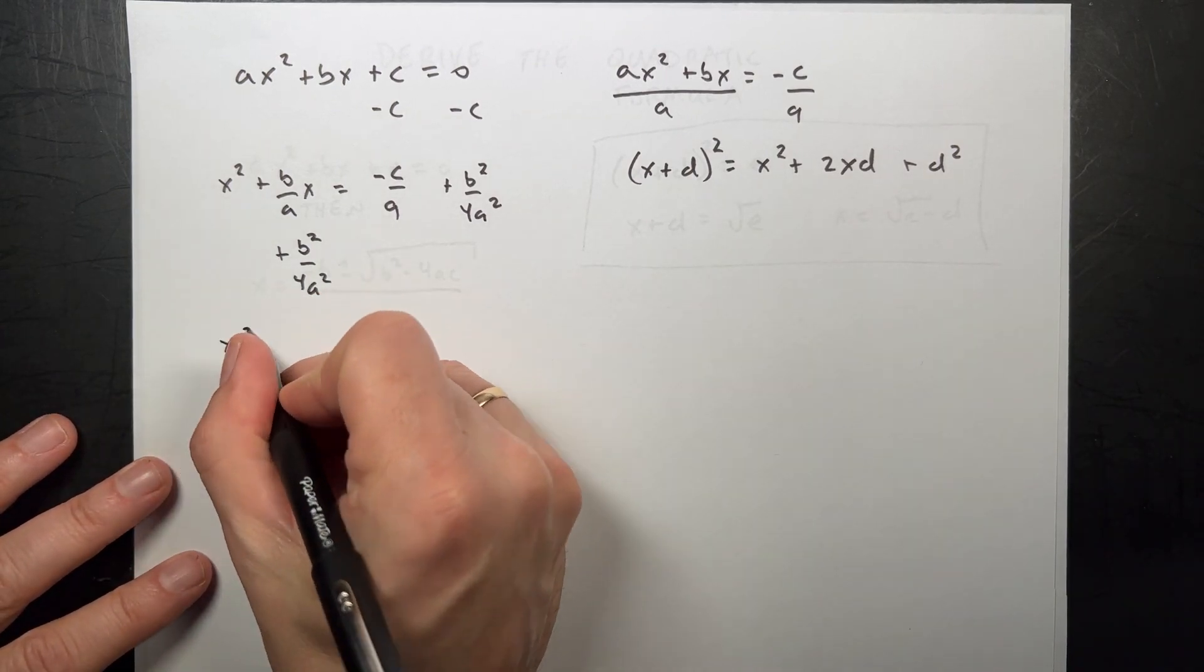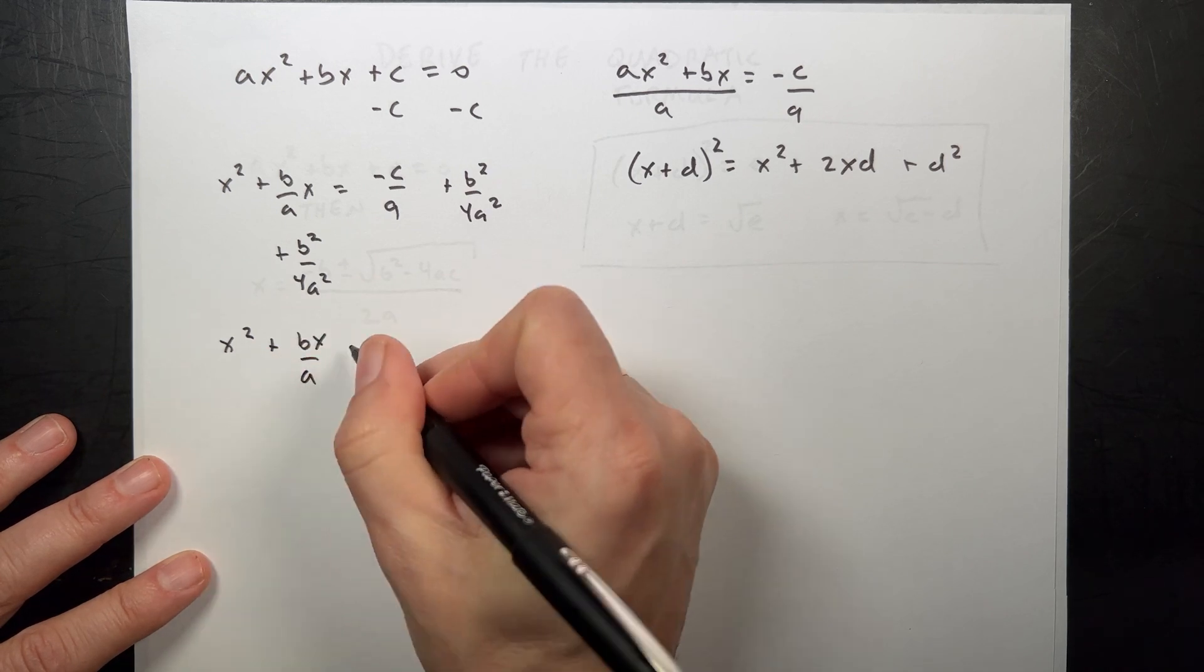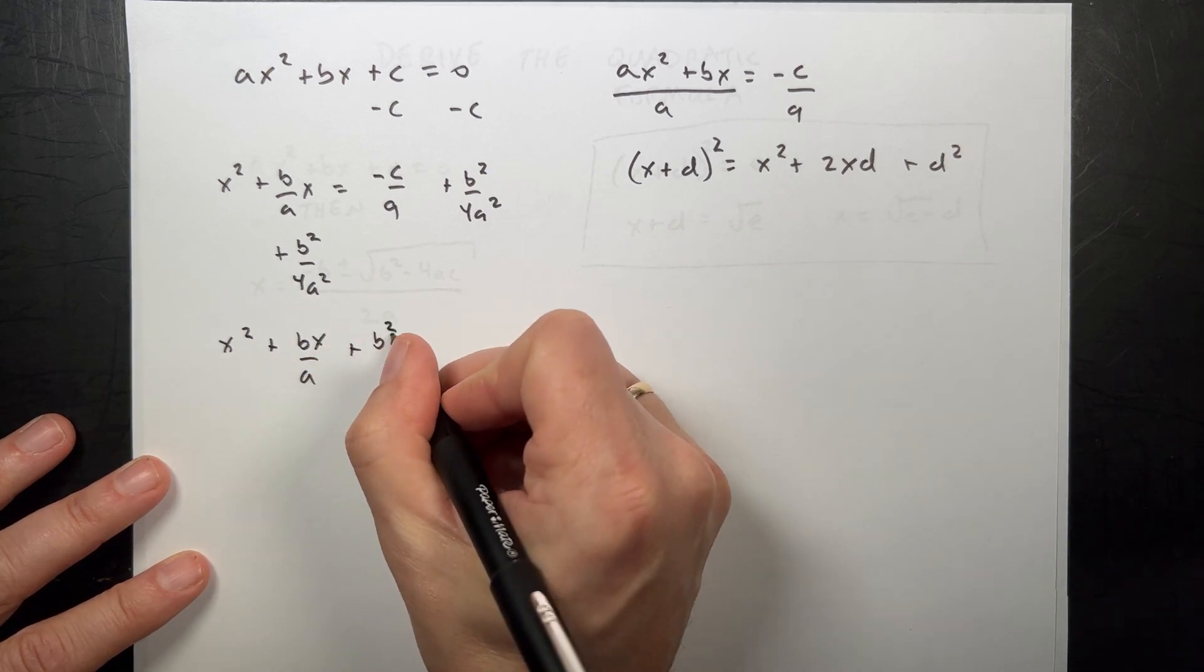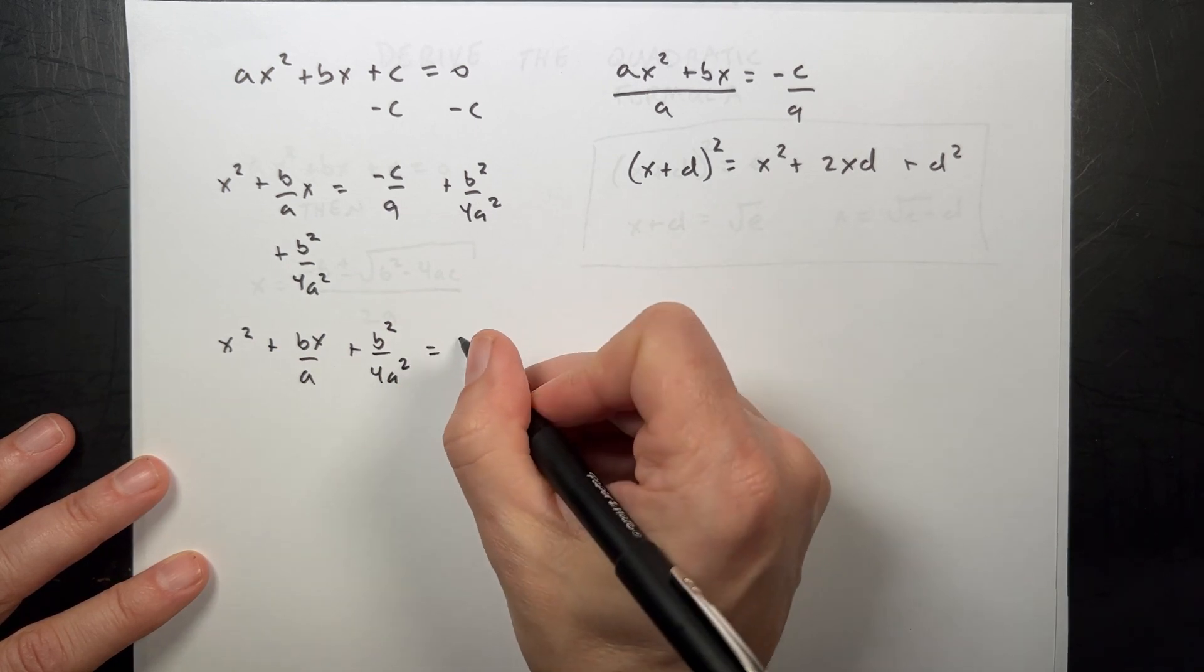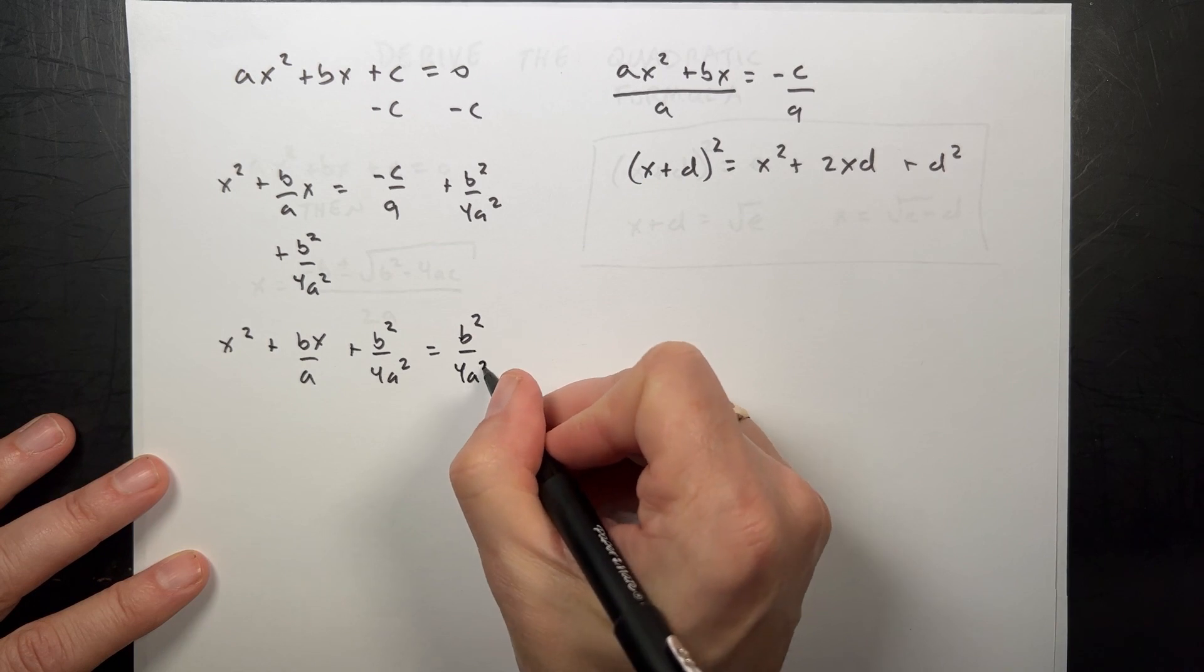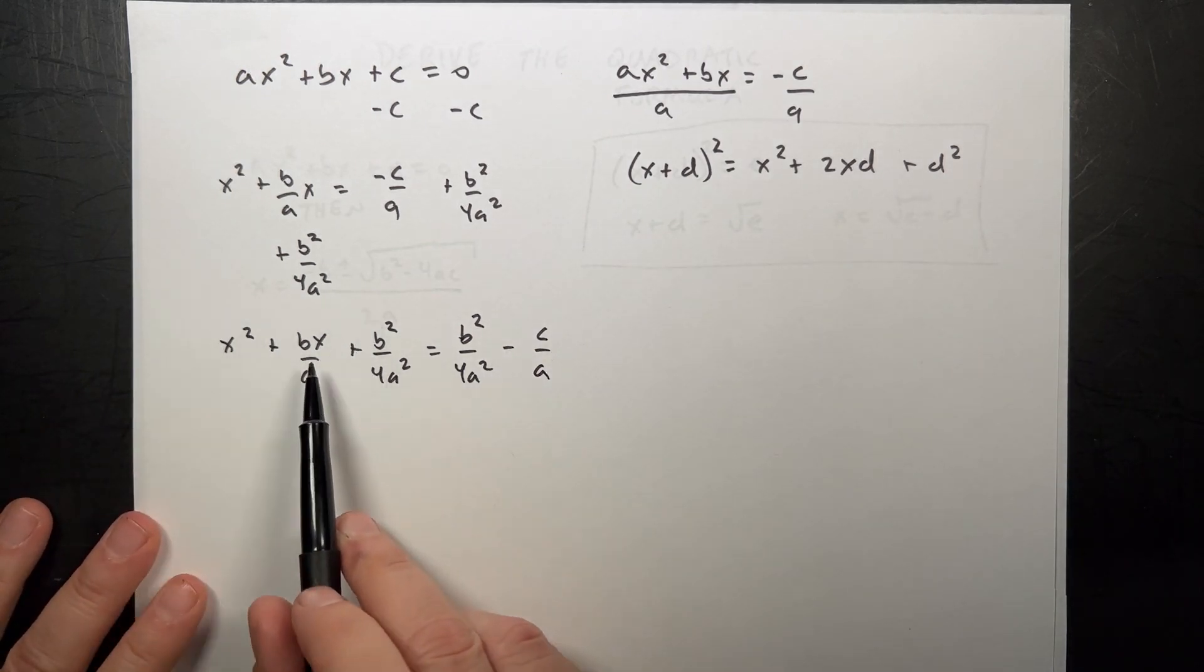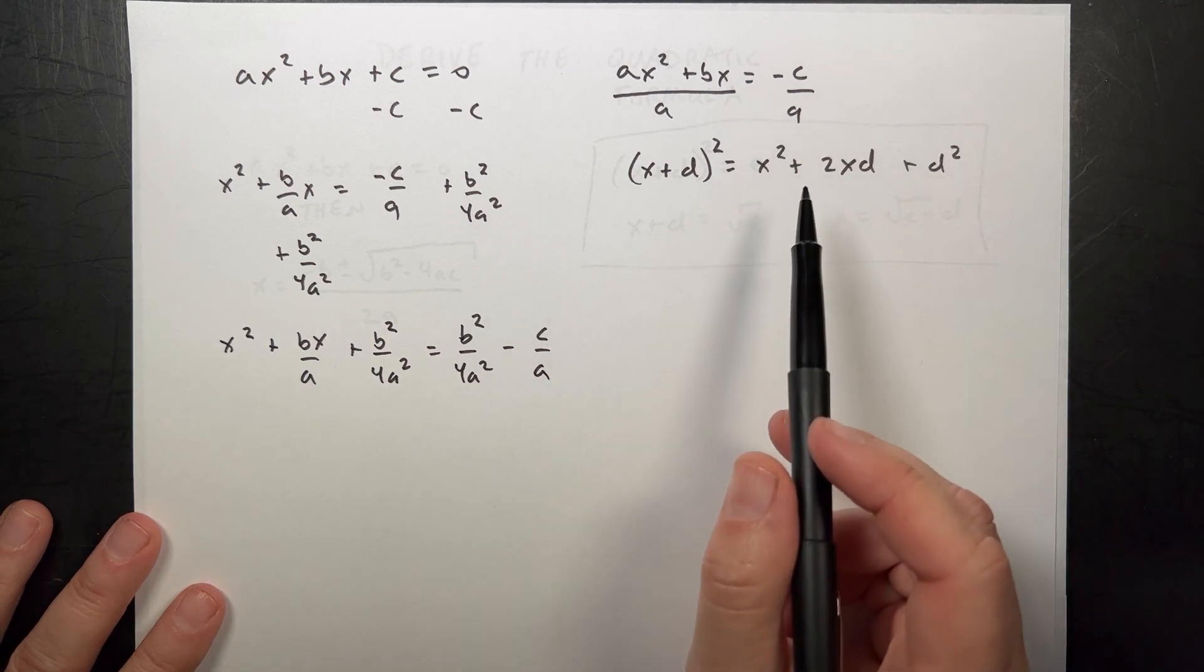But now I get x squared plus bx over a plus b squared over 4a squared equals, let's write this backwards, b squared over 4a squared minus c over a. And so over here you can see I'm starting to get it in the same form as this. That's cool.